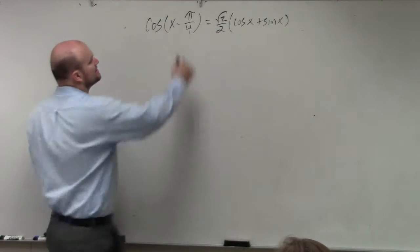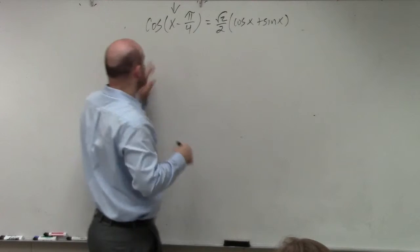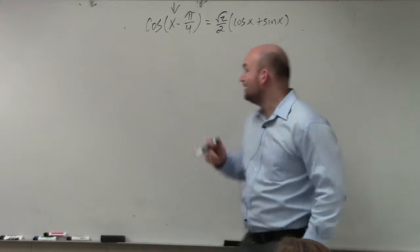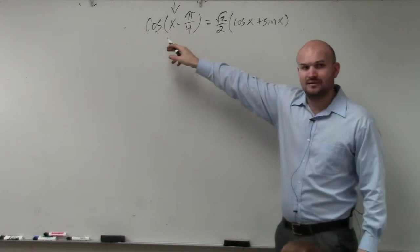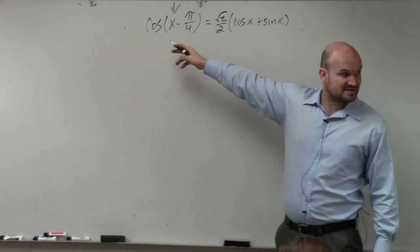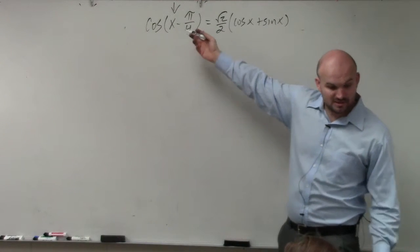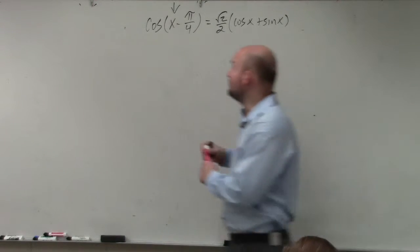So in this case, I'm going to work on the left side because I noticed the cosine of x minus pi over 4. I really don't want to try to rewrite the right side to look like that. But I know I have a formula for this, correct? So if I just apply the formula, I can simplify it.